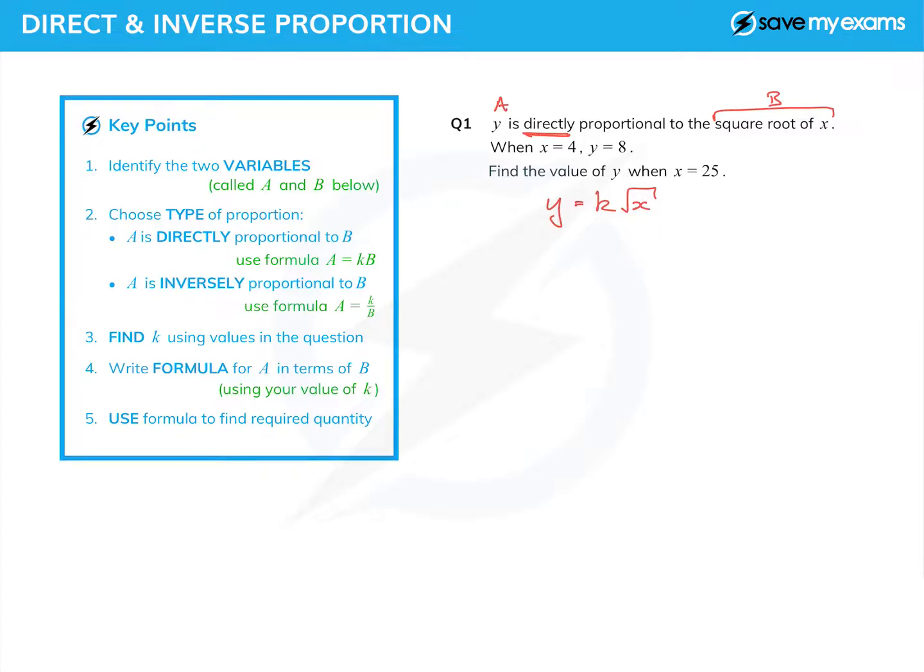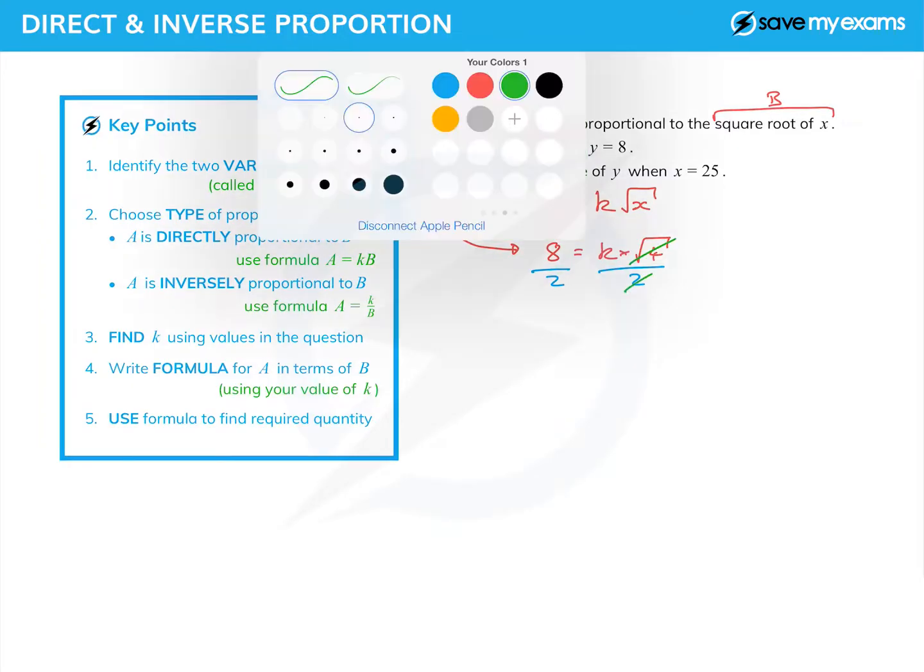Find k using the values in the question. I'm going to put 8 equals k times root 4. Well, root 4 is just 2, so I'm going to divide both sides by 2, and the root 4 cancels with the 2 to give me k equals 4.